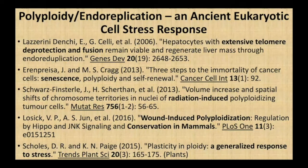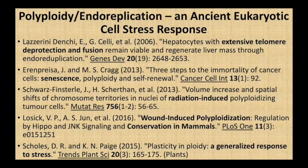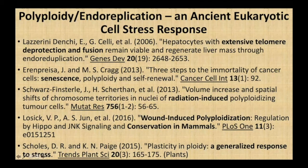Polyploidy and endoreplication are an ancient eukaryotic cell response. Stresses that lead to polyploid cell formation include telomere damage, which often leads to chromosome fusions, chromosome bridges, and chromosome breakage at mitosis; senescence or cell aging, as in the Price and Craig paper from 2013; radiation, which breaks chromosomes; and very interestingly, physical wounding of the tissue. This is a paper about Drosophila, but it points out that the same process goes on in mammals, with conservation of the signaling networks. Polyploidy in plants is a generalized response to stress, which again indicates that the polyploid response to stress has deep roots in eukaryotic evolution.